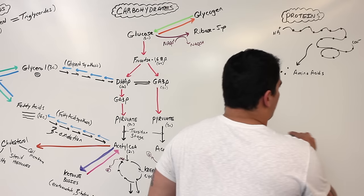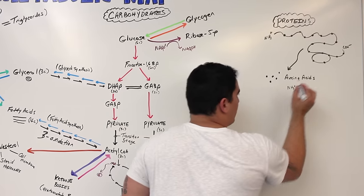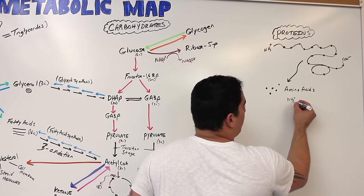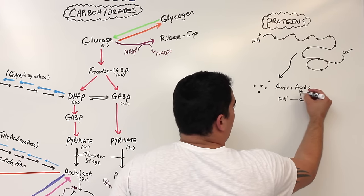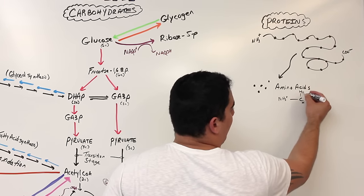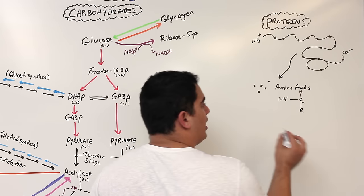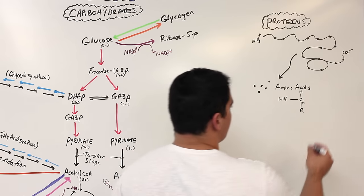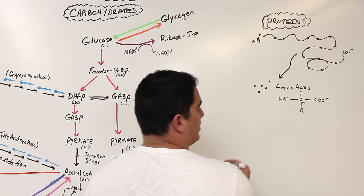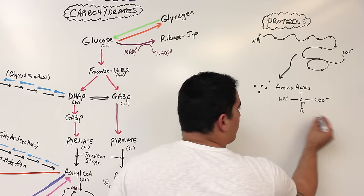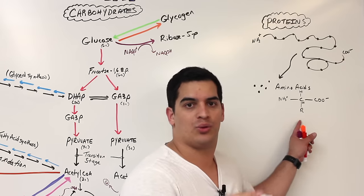Amino acids have what's called an amine terminus, which is the NH3-plus side. They have a carbon called the alpha carbon, with an alpha hydrogen coming off of it. They also have an R group, which makes each amino acid different from one another. And at the other end, they have this carboxyl terminus. This is the general structure of an amino acid, and the R group varies from amino acid to amino acid.